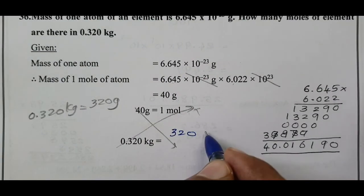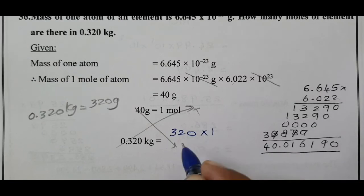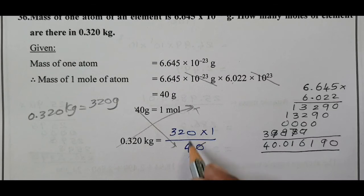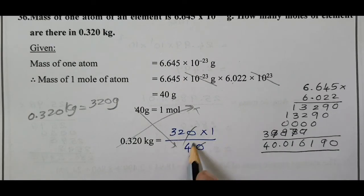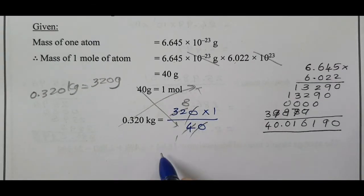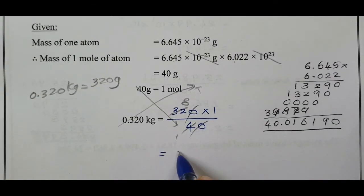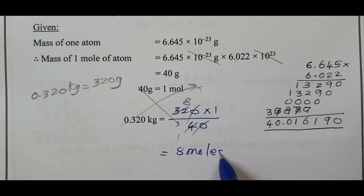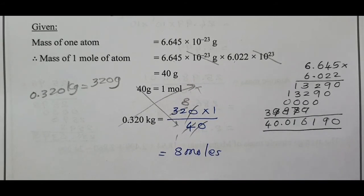320 divided by 40: the zeros cancel, leaving 32 divided by 4. How many 4s are in 32? Eight 4s are 32. Therefore the answer is 8 moles. Question 36 is complete.